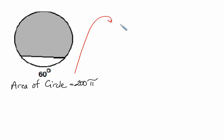The first thing that I'm going to do is set up the fact that pi r squared is going to equal 200 pi. One thing that we can do to both sides is divide through by pi. So we get that r squared is equal to 200.